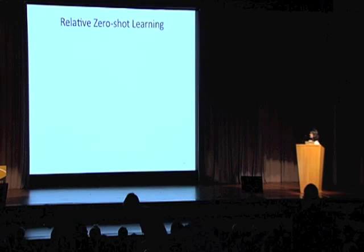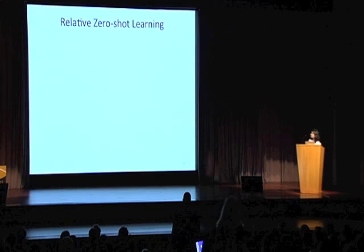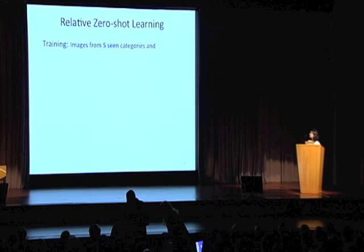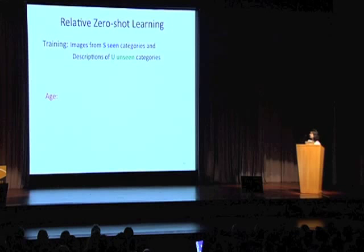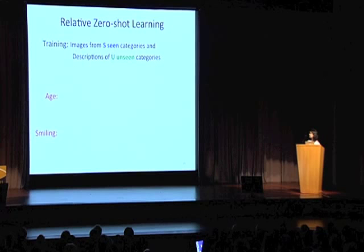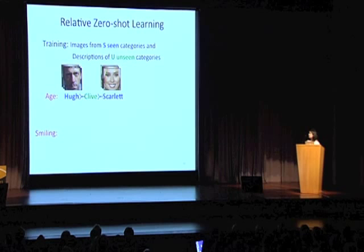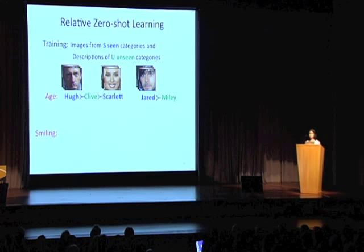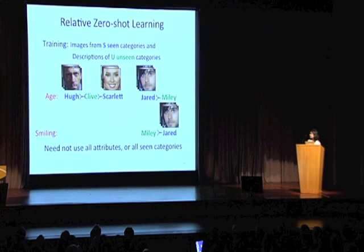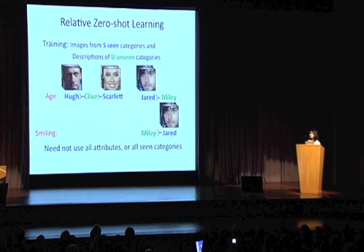How do we use these relative attributes for zero-shot learning? During training, we are given images from S-seen categories, and only descriptions of U-unseen categories — no images for unseen categories. For example, if the machine understands the relative concept of age and smiling, we describe the unseen category Clive as being younger than Hugh but older than Scarlett. Similarly, the unseen category Miley is described as younger than Jared and more smiling than him. Crucially, we need not use every attribute or relate to every seen category, allowing for a lot of flexibility in supervision.